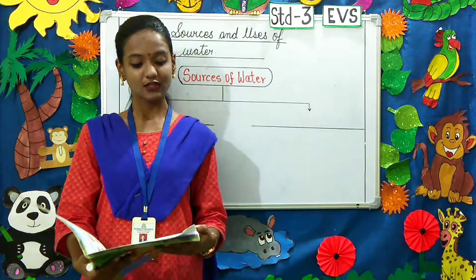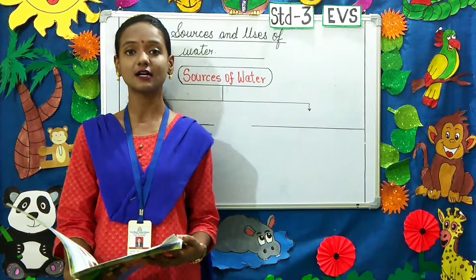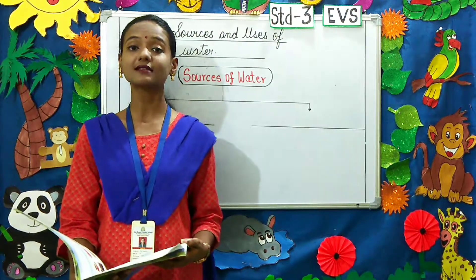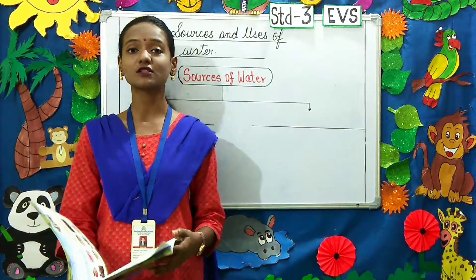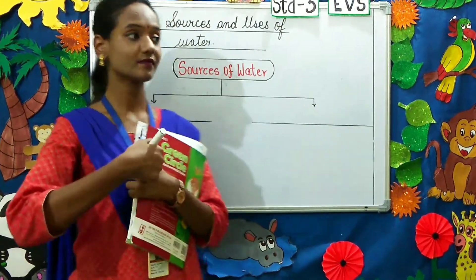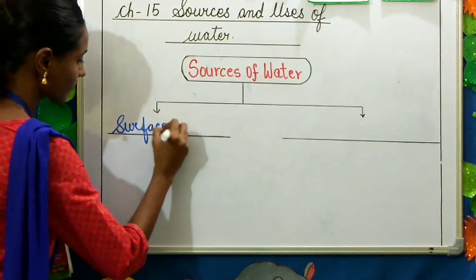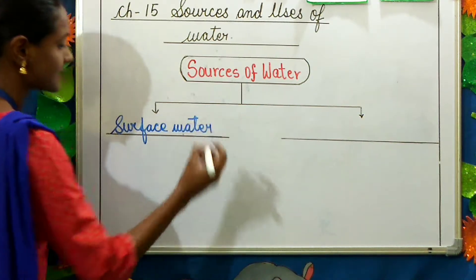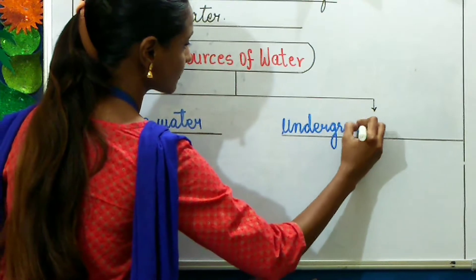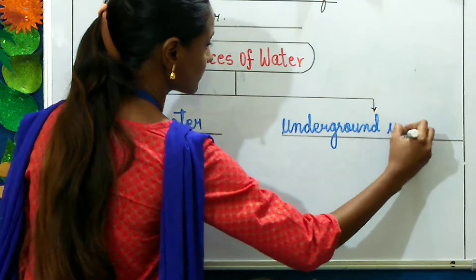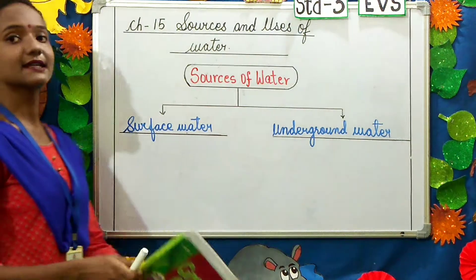Coming to the next topic — sources of water. Rain is the main source of water on the earth, and the rainwater fills the lakes, rivers, oceans, and seas. We can divide the sources of water into two types: the first type is surface water and the second type is underground water.